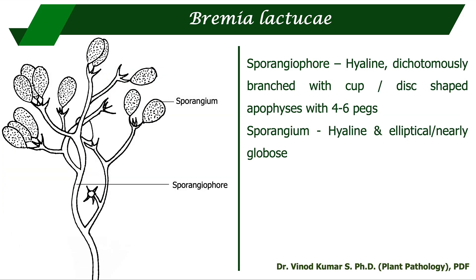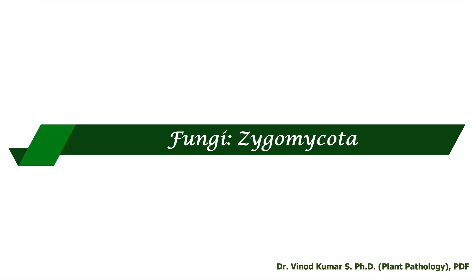Bremia lactucae causes downy mildew of lettuce. The sporangiophore is hyaline and dichotomously branched, similar to Peronospora and Pseudoperonospora, but distinctively it has a cup- or disc-shaped apophysis at the tip with four to six pegs from which the sporangia are borne. The sporangium is hyaline, elliptical, or nearly globose. That is all about the Chromista pathogens.